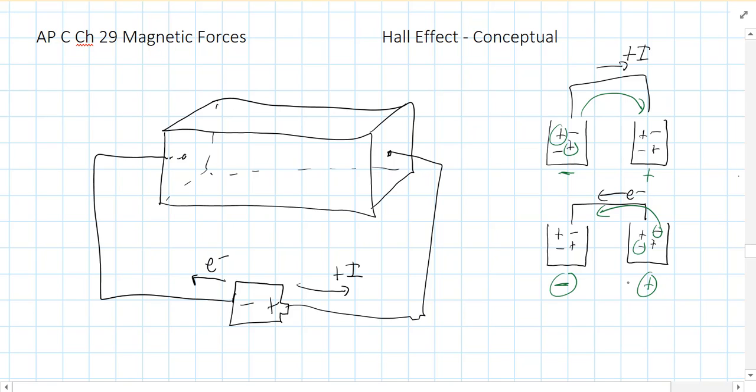So it doesn't really matter in terms of studying just current alone whether positive or negatives move. They would move in opposite directions, but we can't tell which one's moving. So even though the electron wasn't discovered until 1897,